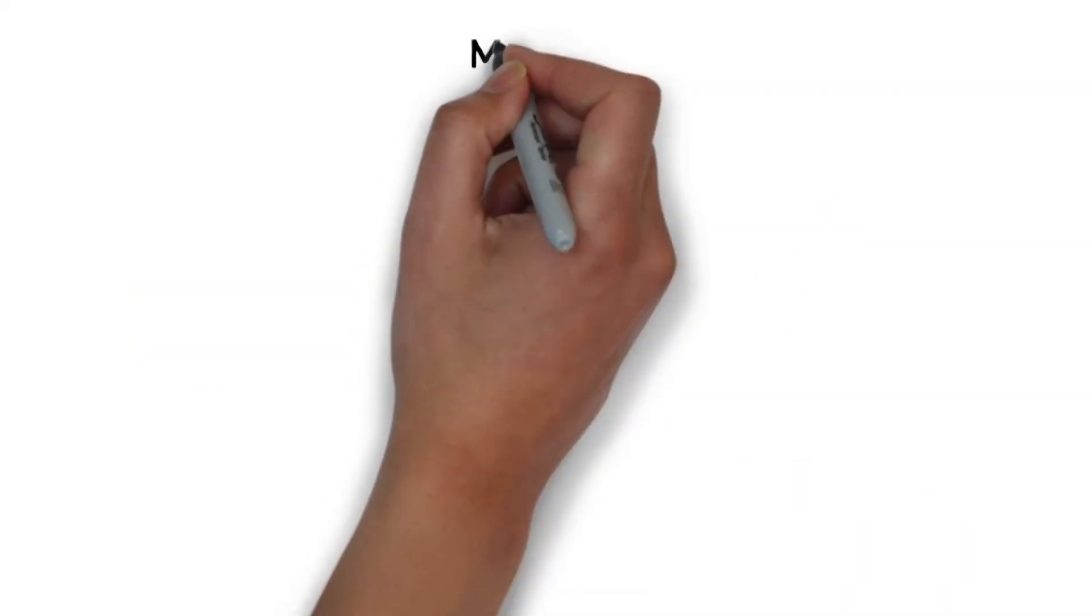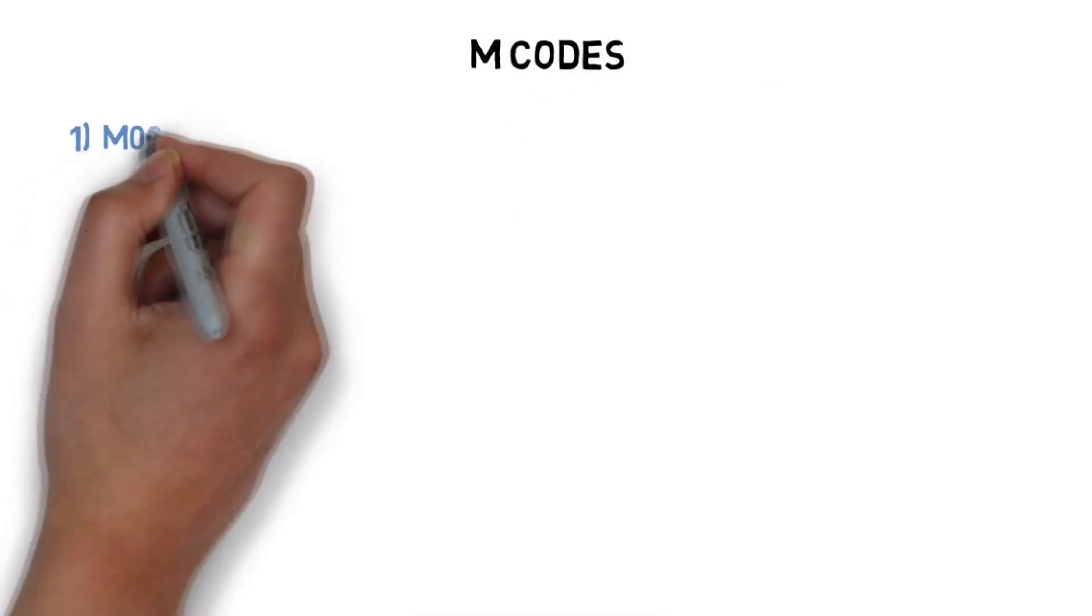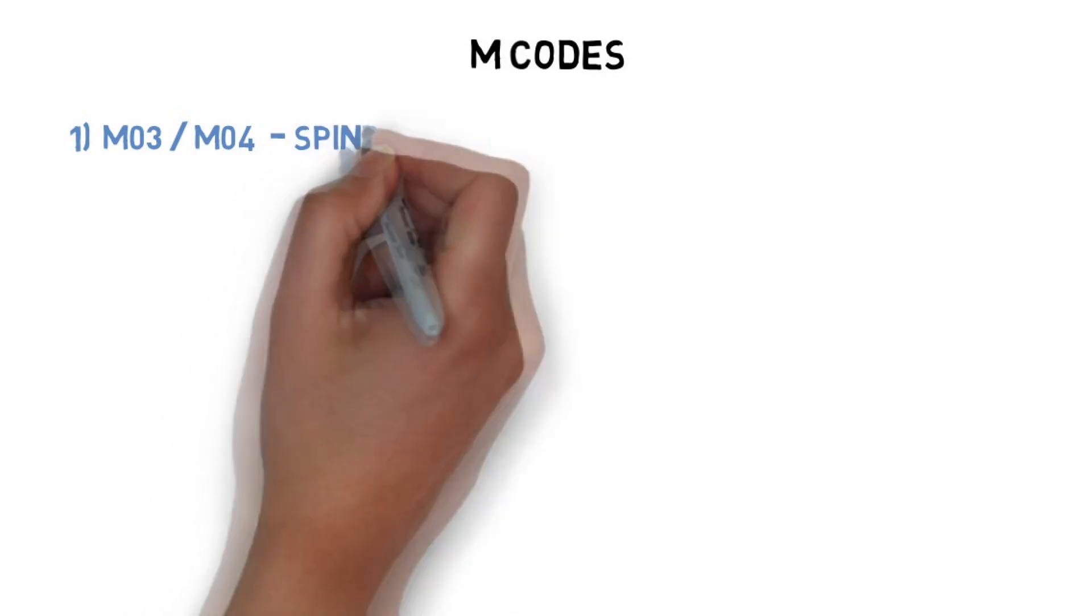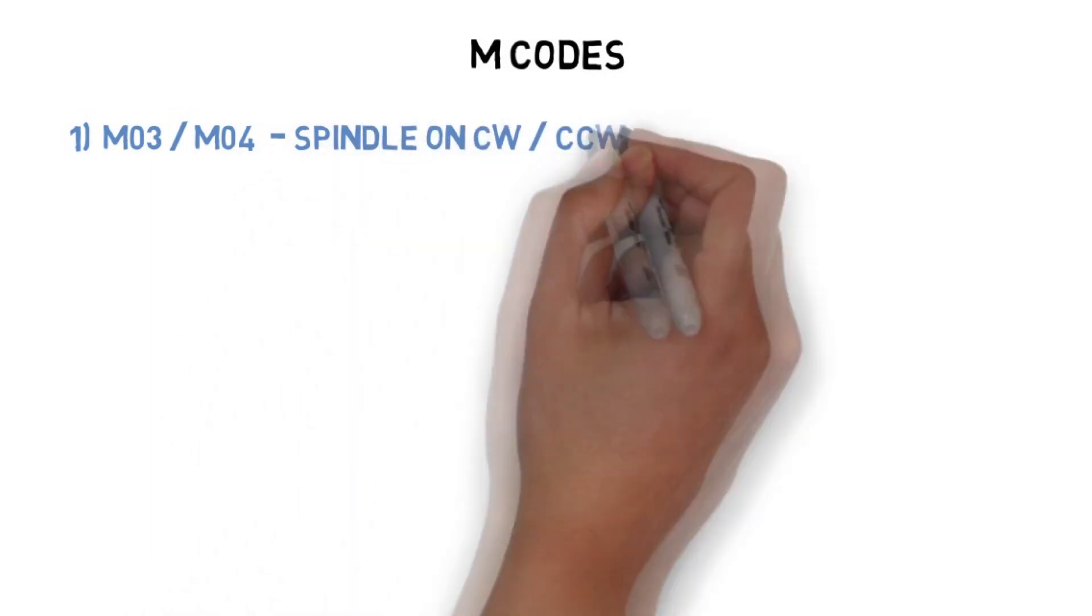Now we will look into M codes. Number one, M03 and M04 are used for spindle revolution in clockwise direction and counterclockwise direction respectively. The format is M03 or M04 and S. S is RPM, which we can choose according to cutting parameters. The unit is revolutions per minute.